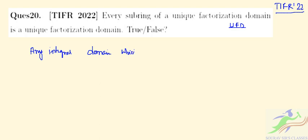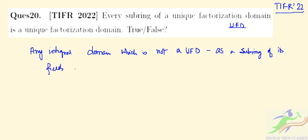We take any integral domain which is not a UFD — a unique factorization domain — as a subring of its field of fractions. For example, consider Z[√-5] as a subring of its field of fractions.